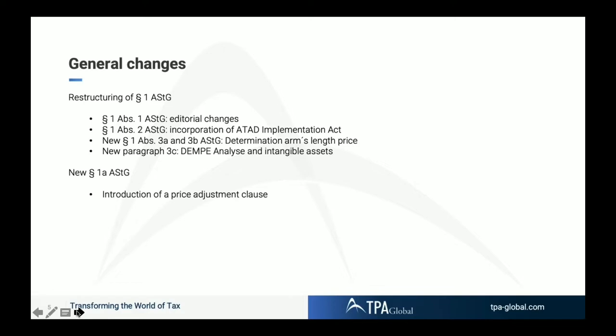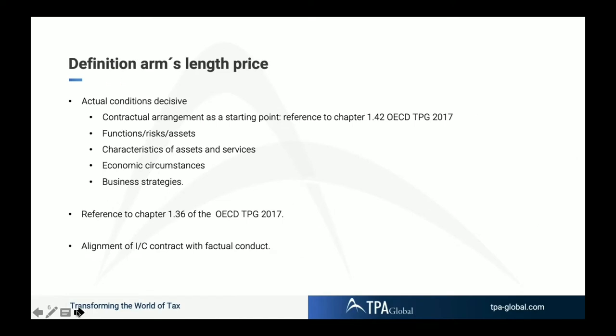A new paragraph 3a and 3b now includes the legal basis for the determination of the arm's length price. A new paragraph 3c includes the legal basis for the DEMPE analysis and for dealing with intangible assets. The next new thing is paragraph 1a: the introduction of a price adjustment clause for intercompany transactions.